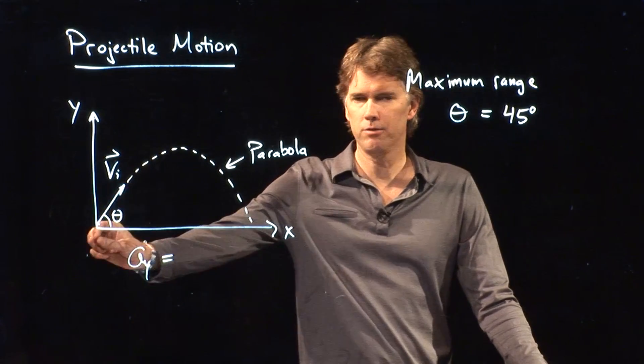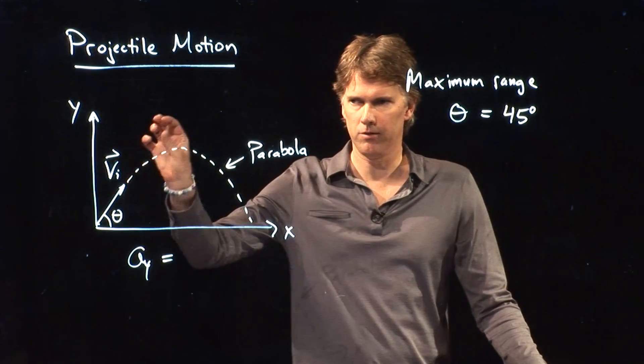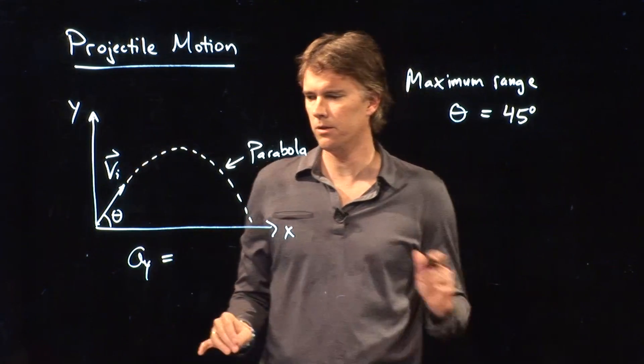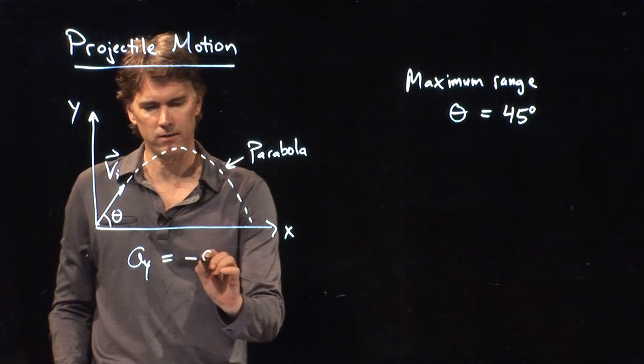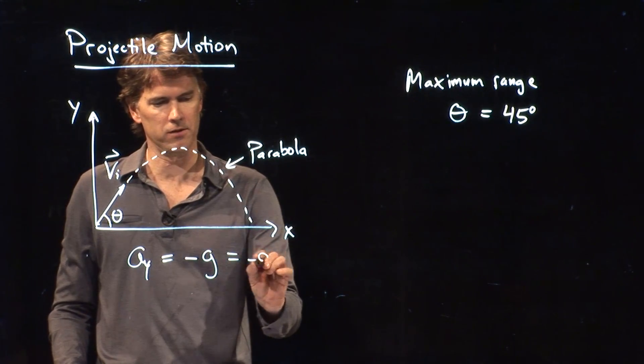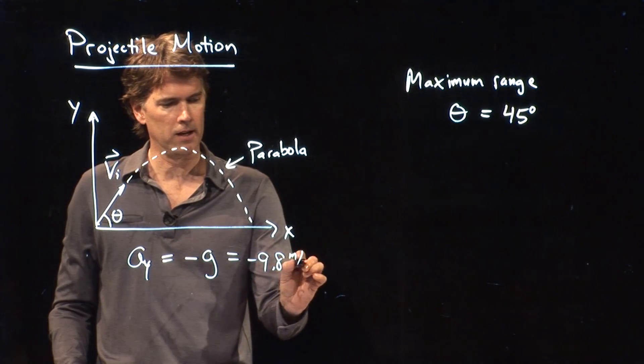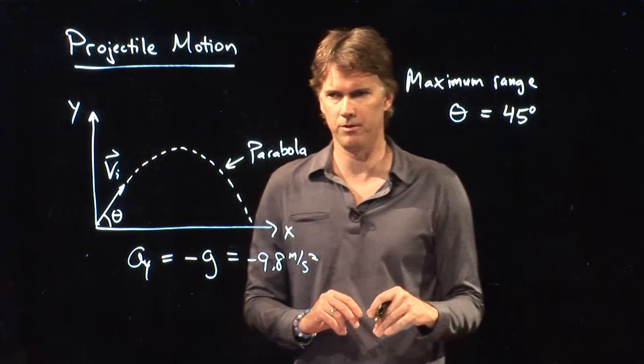As soon as it leaves our hand or leaves the cannon or leaves the rifle, it's always negative. It's always negative g, which is negative 9.8 meters per second squared. Here on Earth, of course.